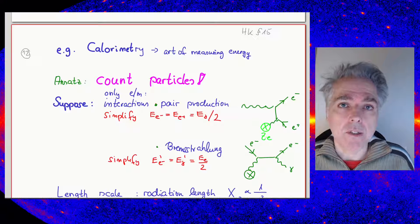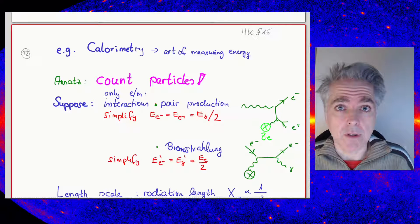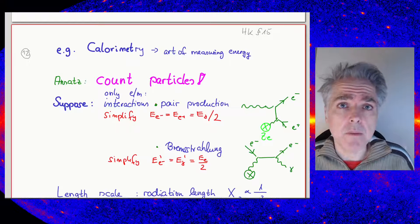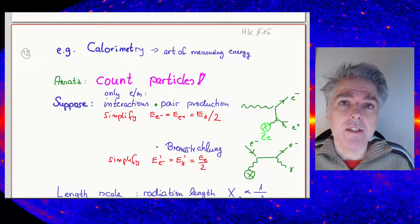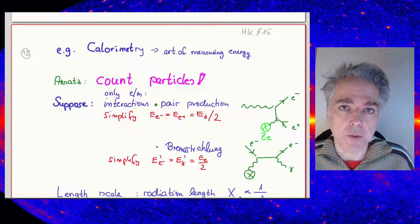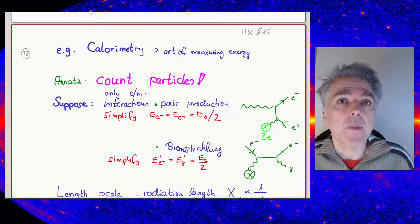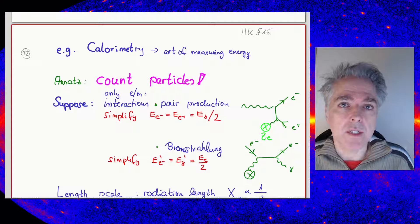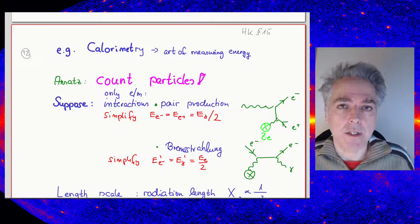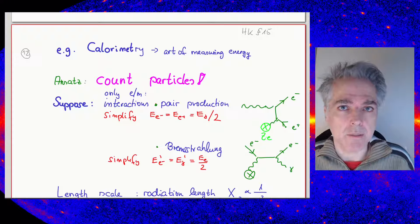Both pair production and Bremsstrahlung share common features. In both processes, the energy of the incoming particle is shared between the outgoing particles: electron and positron for pair production, and electron and photon for Bremsstrahlung. In the simplest approach, we assume the energy is shared equally. In detail this is more complicated, but on average it is not a bad estimate.